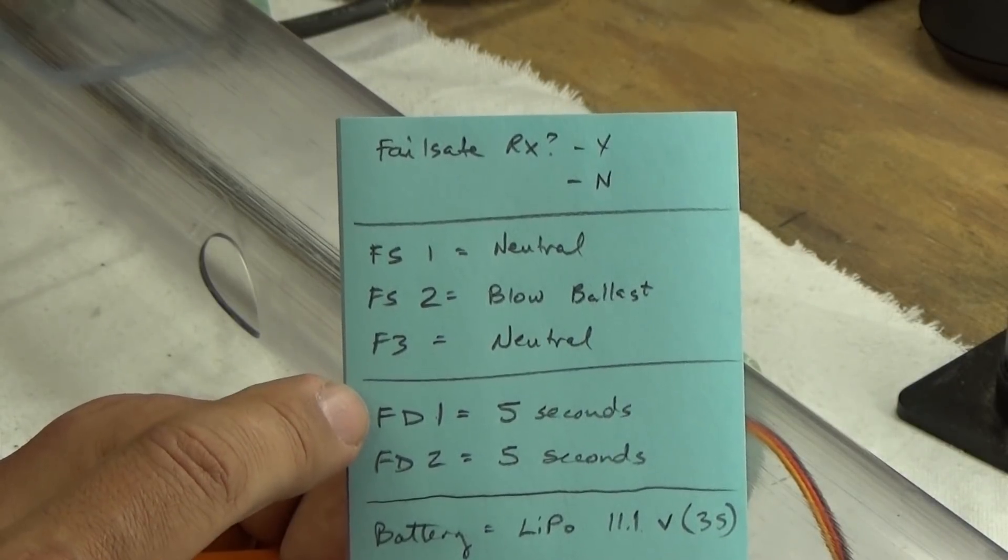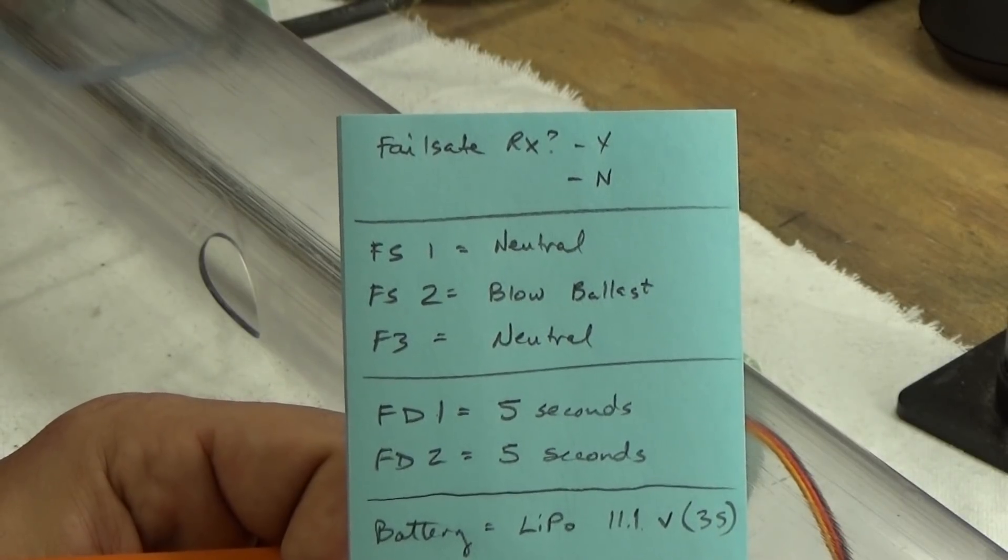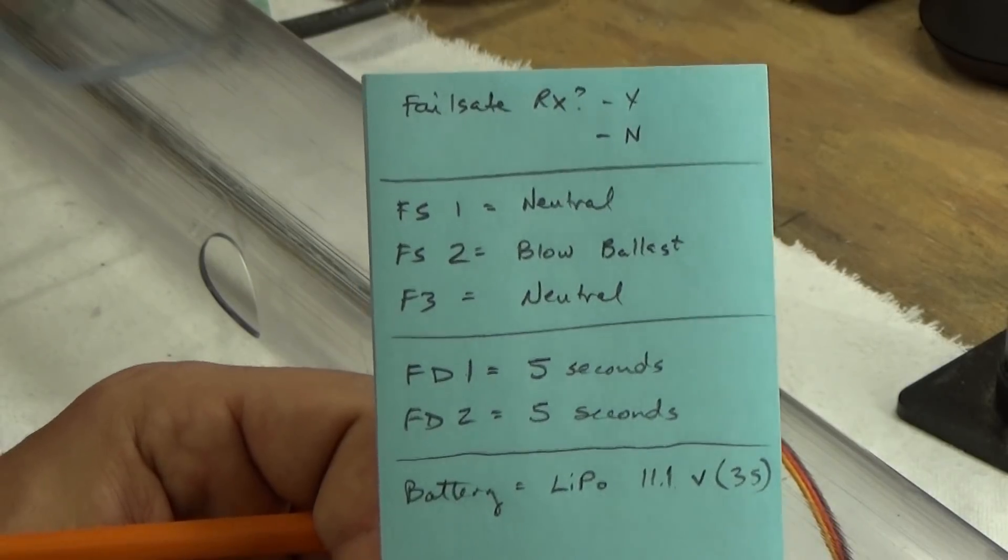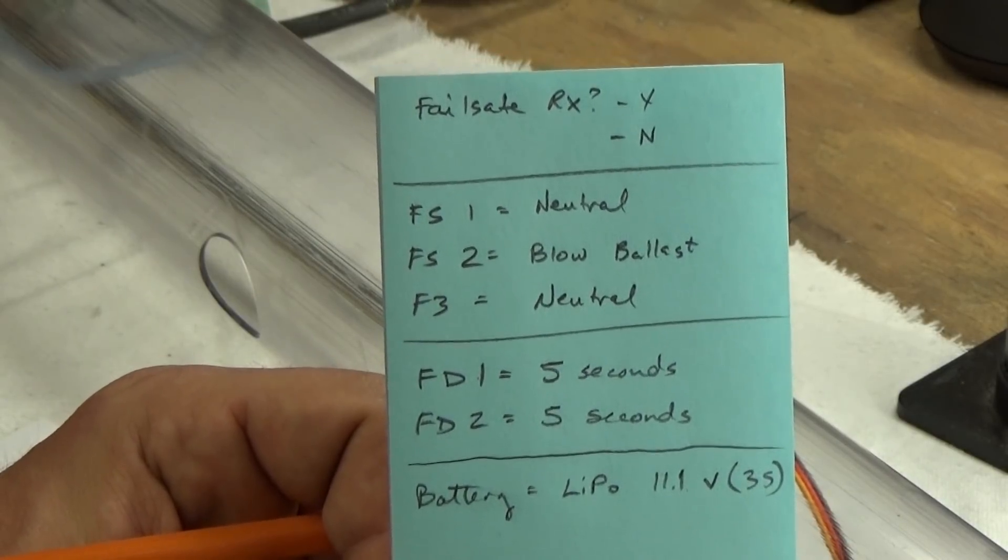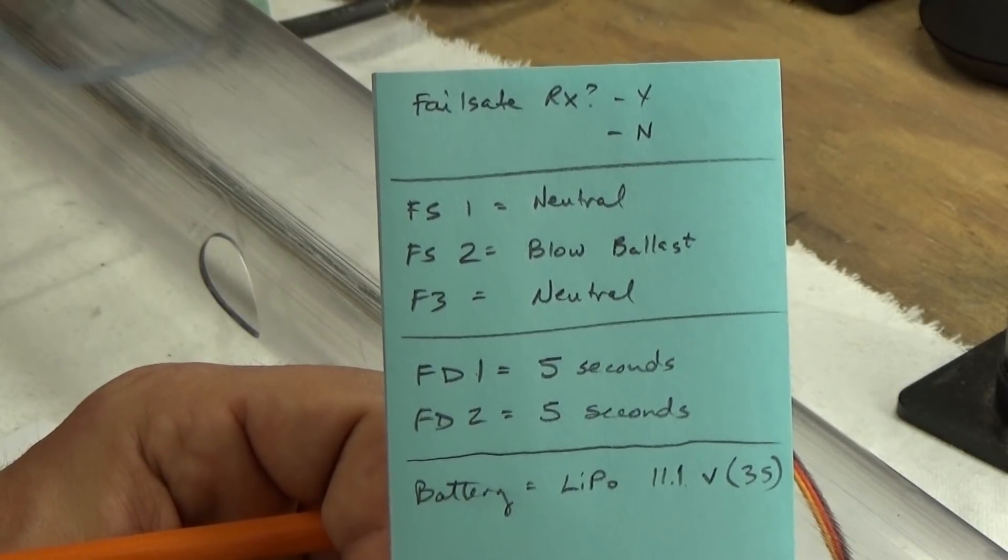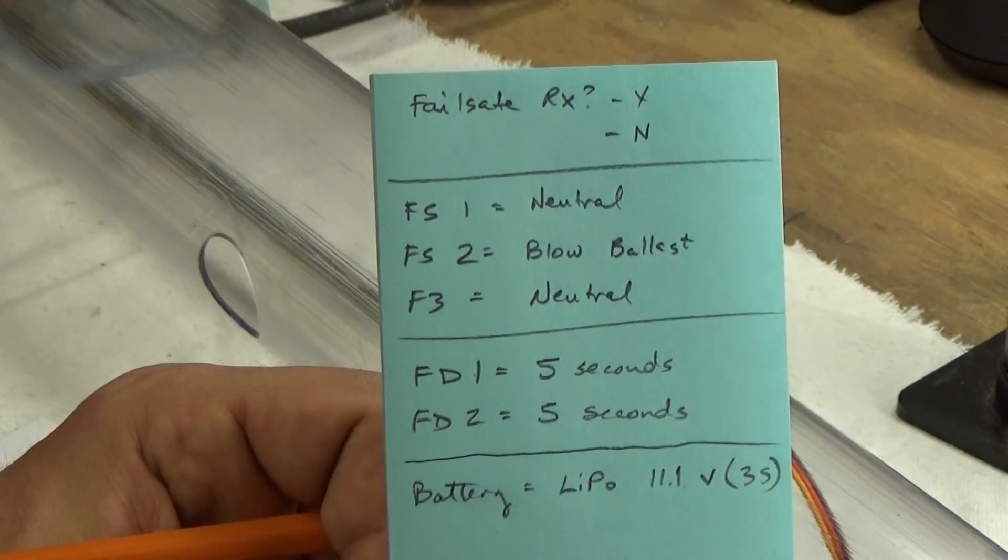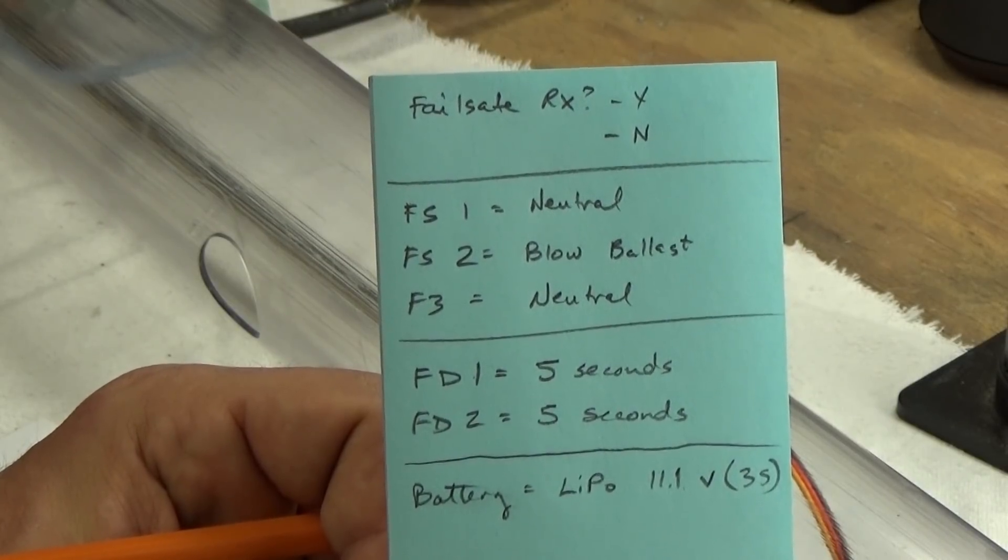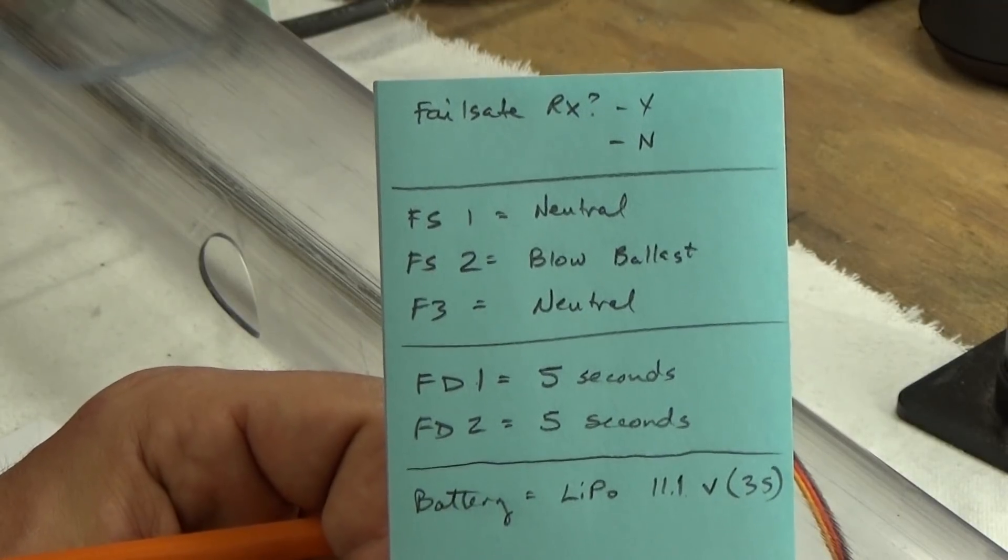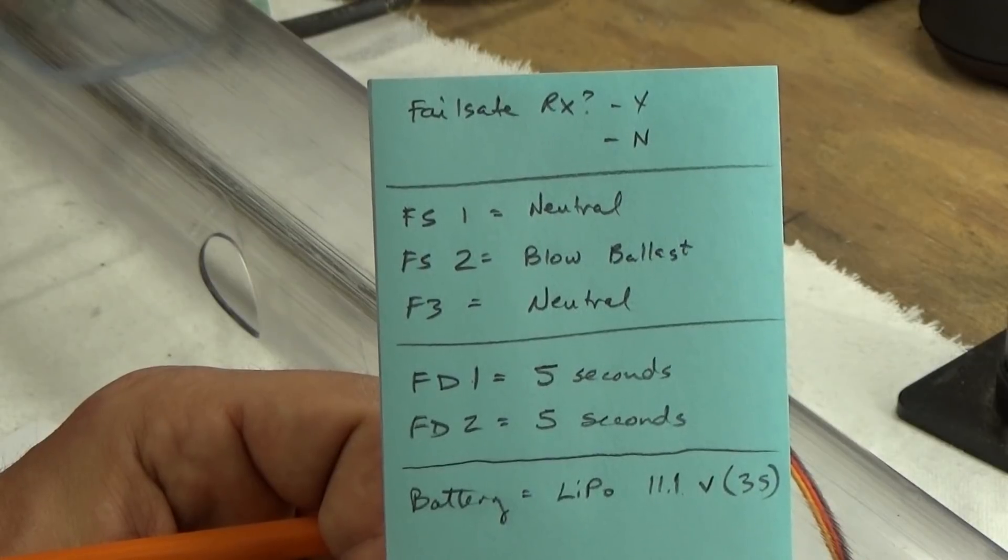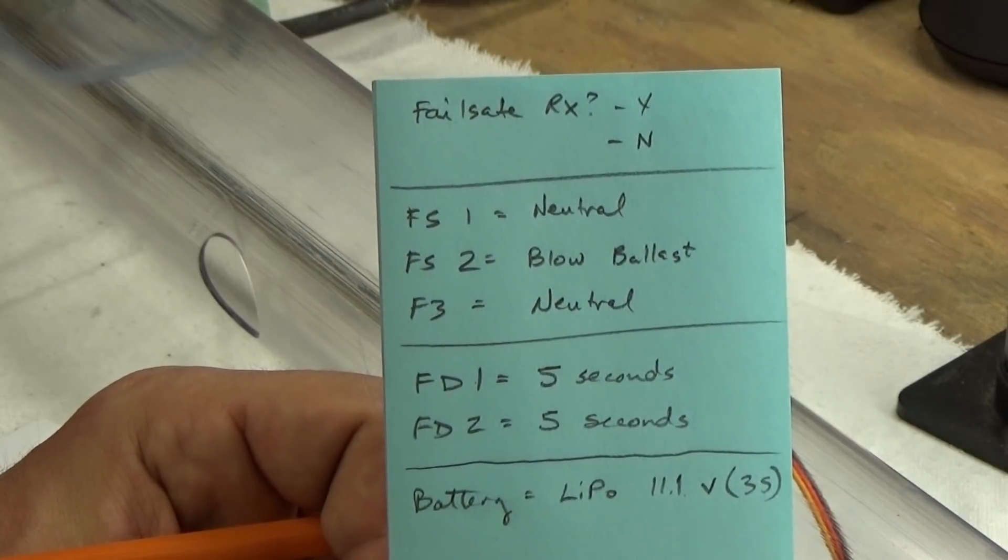The other thing we've got to do in the next stage is figure out our duration. For failsafe one, how long is it going to wait before it attempts to correct the issue? I've decided on five seconds. That's enough to eliminate momentary glitches. The next one is how long it attempts to correct the failsafe situation, so how long is it going to blow ballast for. Again, I've got five seconds on there. And then after that it moves into failsafe stage three until the situation is resolved.